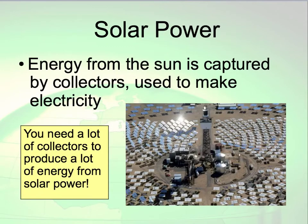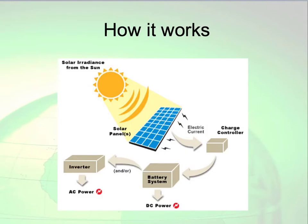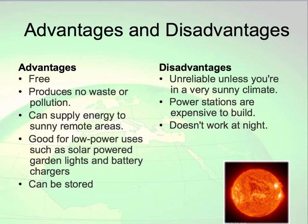Solar energy comes from the sun and is used to make electricity. Solar panels collect sunlight to make electricity — incoming solar radiation generates an electric current, which goes into a battery to give us power. You should note at least three advantages and three disadvantages. Advantages: it is free, produces no pollution, and can supply energy to sunny remote areas and can be stored. Disadvantages: it is unreliable unless you are in a very sunny place, it is expensive, and it does not work at night.